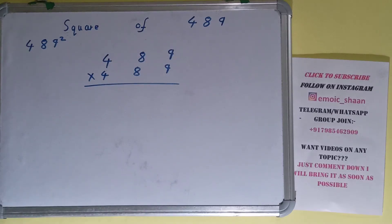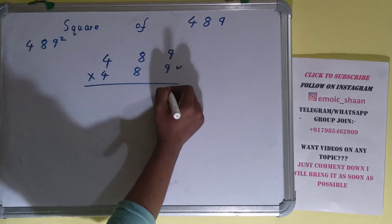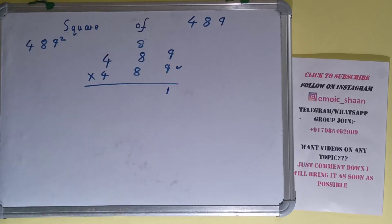So let's start with this. 9 times 9 is 81, 8 carry. 9 times 8 is 72 plus 8 is 80, 8 carry. 9 times 4 is 36 plus 8 is 44.